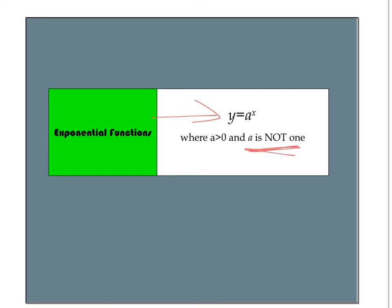Think about it — what is 1 raised to any power? What's 1 raised to the 3rd power? It's just 1. What's 1 raised to the 5th power? Just 1. What's 1 raised to the 121st power? Just 1. So 1 doesn't work as a base for an exponential function.